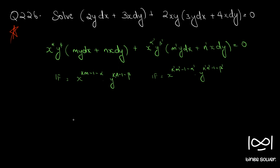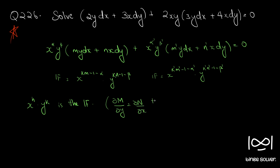In this question we are going to use a different method. Even if you forget all the k minus 1 minus alpha formulas, you can simply assume x^h · y^k is the integrating factor. Once you multiply with the differential equation it becomes exact, so we use the condition for exactness: ∂M/∂y = ∂N/∂x to solve for h and k and find the integrating factor. The advantage of this method is you don't have to memorize all those formulas.